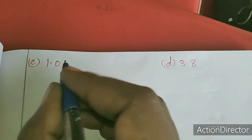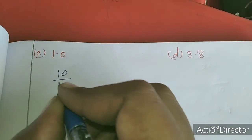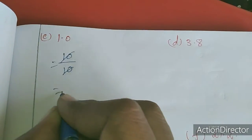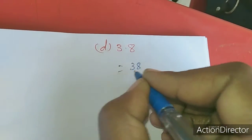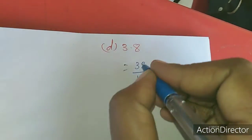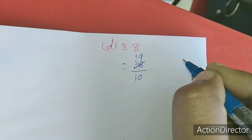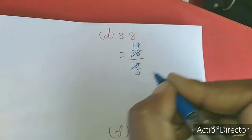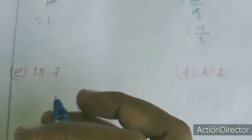0.6: 1 digit after dot, so 6 by 10. Divide by 2 table: 3 by 5. For 3.8: 1 digit after dot, so 38 by 10. Cancel by 2: 19 by 5.